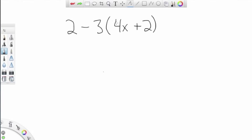So in this problem, we have to first multiply negative 3 times 4x and negative 3 times 2.